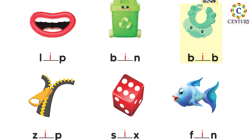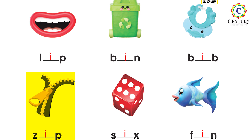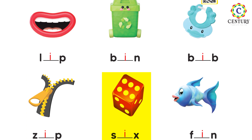Now 'bib' — bib jo baby's khana khate waqt pehnte hain — so B, B — it's bib. So yahan pe aapne letter 'i' likhna hai. Zip — zip — Z, I, P — what is missing? Yaani ki letter 'i' missing hai.